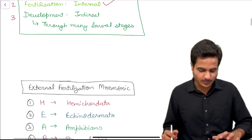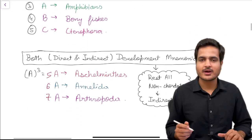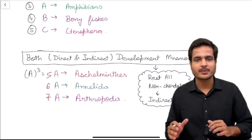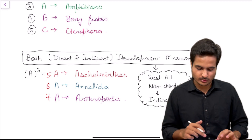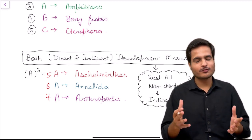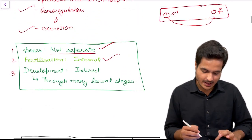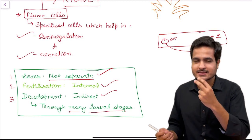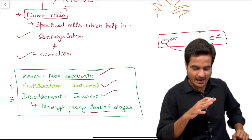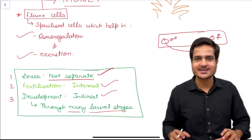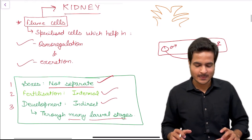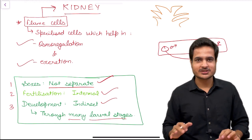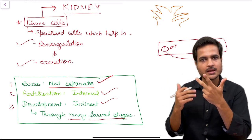Regarding development: using the mnemonic that only the fifth, sixth, and seventh phyla have both direct and indirect development — Platyhelminthes is not in that group, so it has indirect development, passing through many larval stages. These larval cycles are studied in detail in microbiology at second year level. To summarize the young ones box: sexes are not separate, fertilization is internal, and development is indirect through many larval stages.